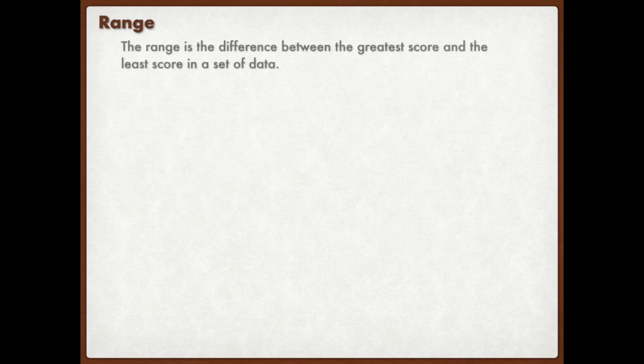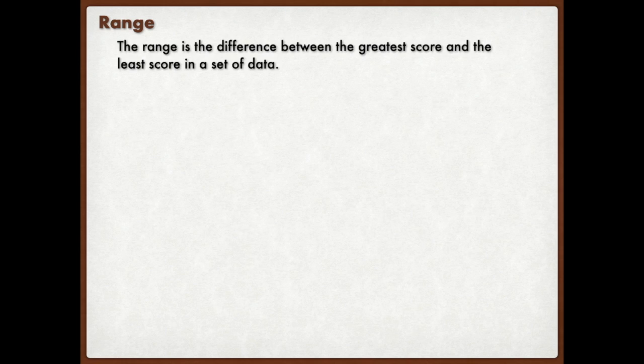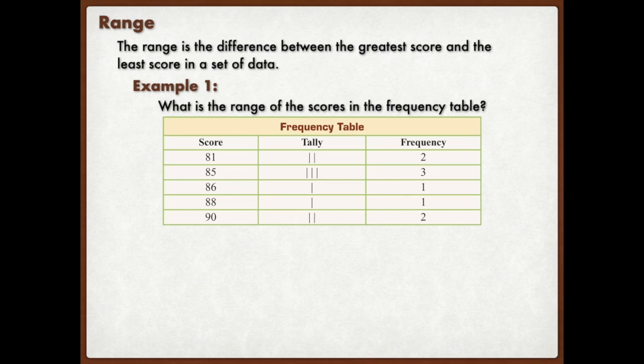Now if I want to talk about the range. The range is the difference. Remember, when we say difference, we're usually talking about subtraction, right? The range is the difference between the greatest score and the least score in a set of data. So generally, I'm just saying, what is the difference? What is the space between the largest and the smallest? Here I have a frequency table. I want to know what is the range of the scores in the frequency table. So I'm going to look at all the scores. What's the smallest? 81. What's the largest? 90. Now in order to figure out the range, what I want to do is subtract. I want to subtract 81 from 90. When I subtract 81 from 90, that gives me nine. So the range is nine. The separation between the two, nine points. So the equation for range will be greatest score minus the least score, which is 90 minus 81, giving me nine.